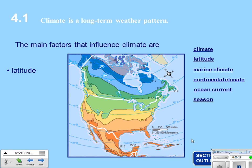About climate being a long-term weather pattern, the main factors that influence climate are latitude — how far away you are from the equator or close to the poles, whether close to the north pole, the equator, or the south pole.